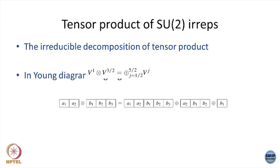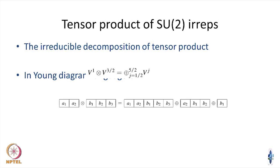Coming back to your familiar notation: if you take a tensor product of spin 1 with spin 3/2, you all know how to compose spin 1 with spin 3/2. You start with |J1 minus J2| and go up in steps of 1. J runs from |J1 minus J2| which is 1/2, in steps of 1, up to 5/2.